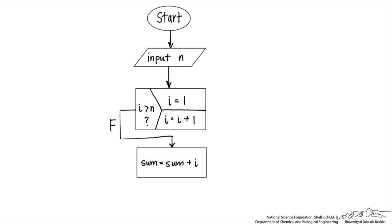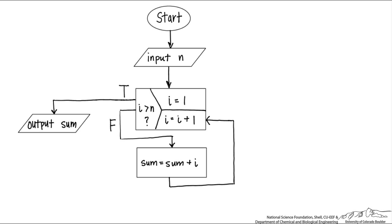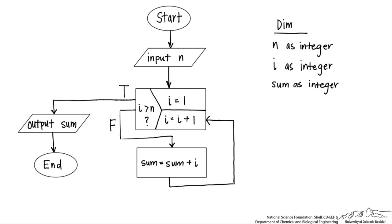Sum starts at 0. When we go through the first iteration, sum is now going to be 1. The next iteration, i will be 2, so the sum is going to be 1 plus 2, which is 3, and we keep going. When we have exceeded the number n, we're out of the For loop — we then output the sum and end. One last thing I like to add is a list of variables we're going to dim: n, i, and sum are all going to be integers.